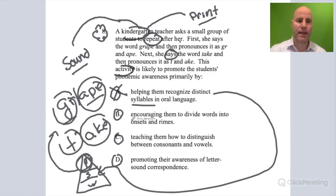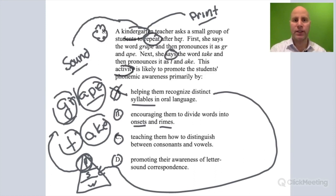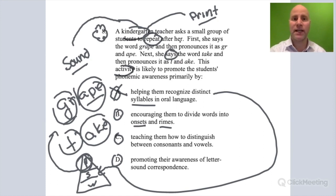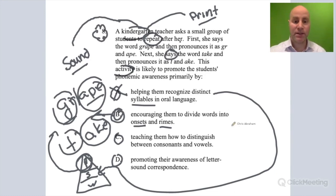What about B? 'Encouraging them to divide words into onsets and rhymes.' Well, that's exactly what we're doing. The teacher is taking 'grape' and breaking it into its onset, 'gruh,' and its rhyme, 'ape.' Taking 'take' and breaking it into its onset and its rhyme, 'ache.' This is more advanced hearing, so it falls under that phonemic awareness phoneme level. B is the answer.